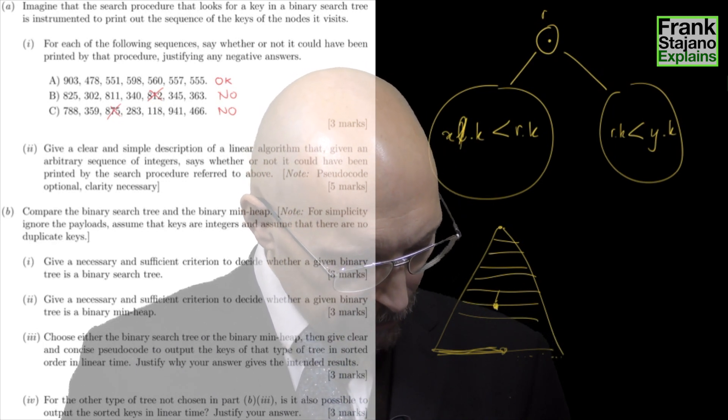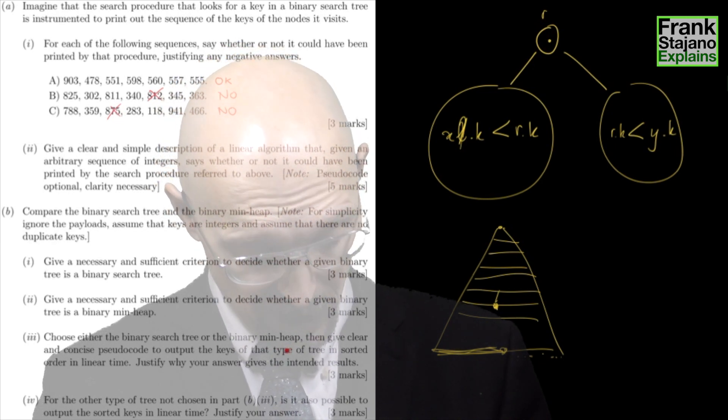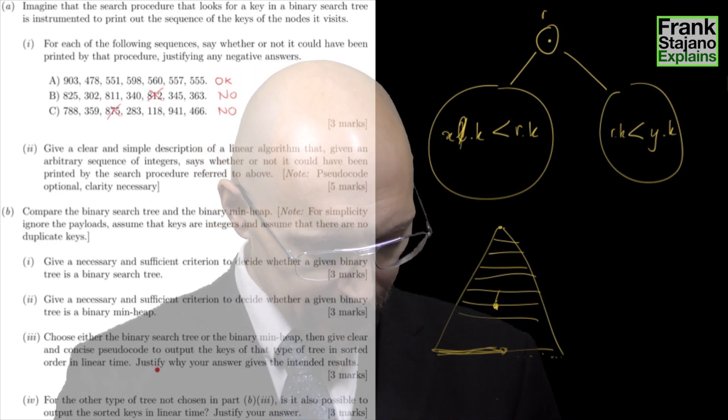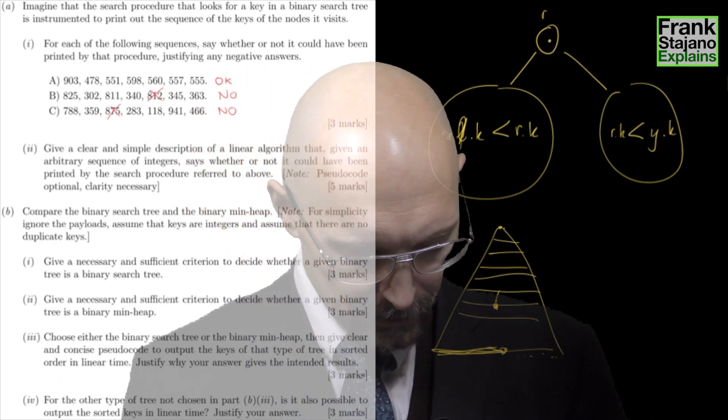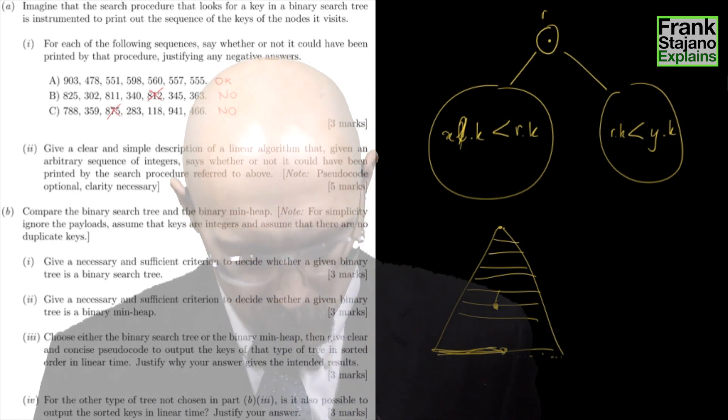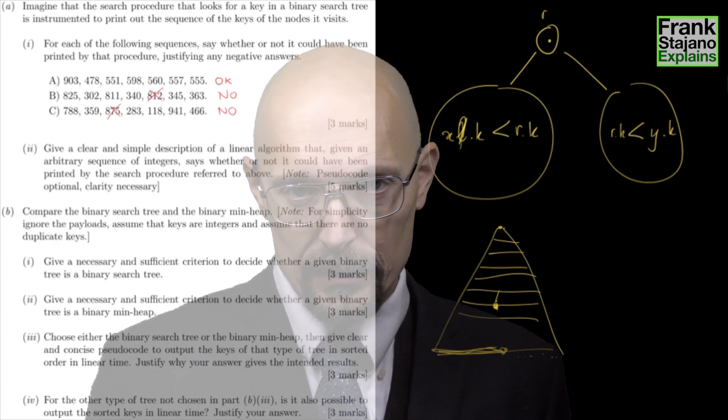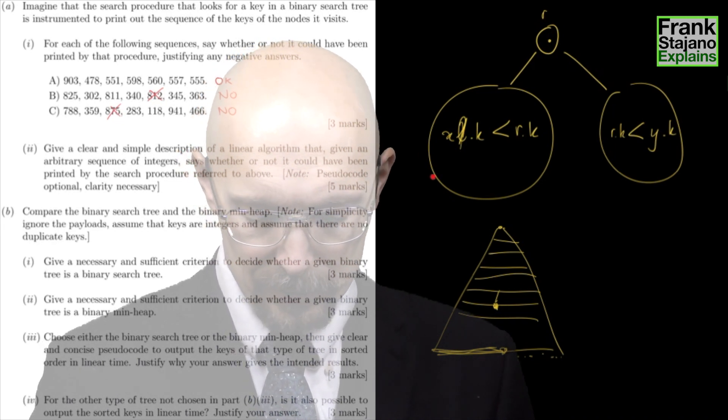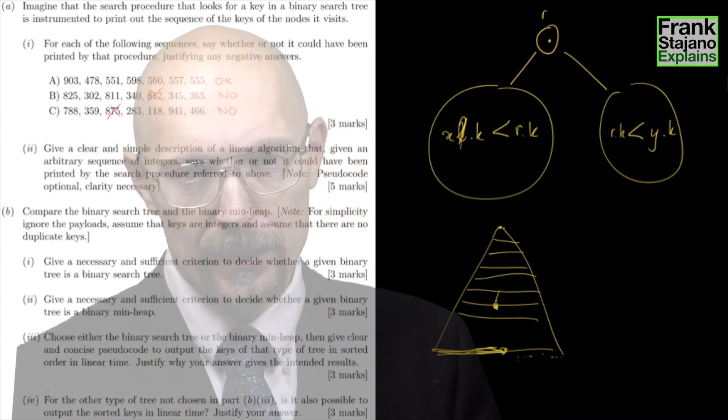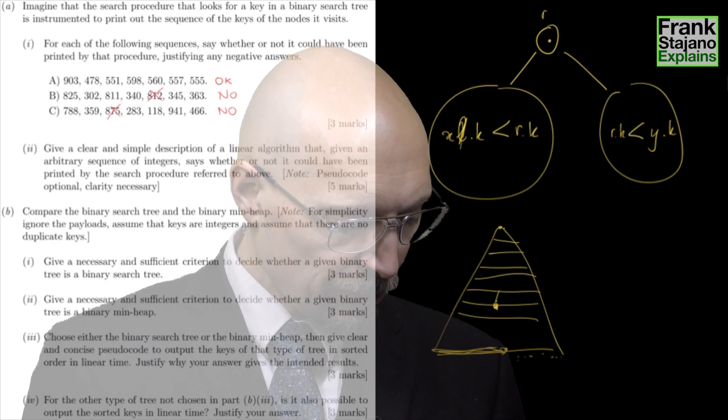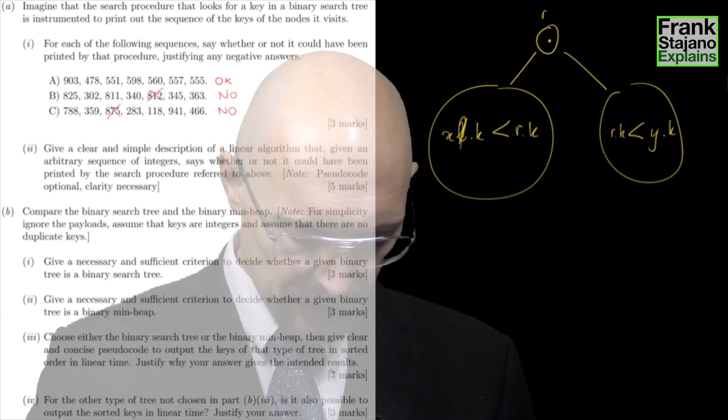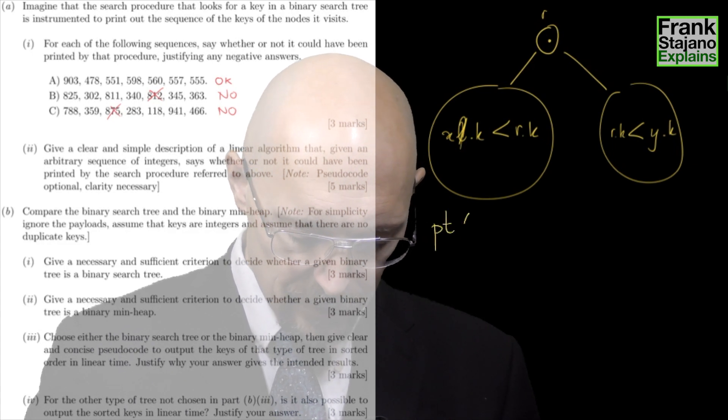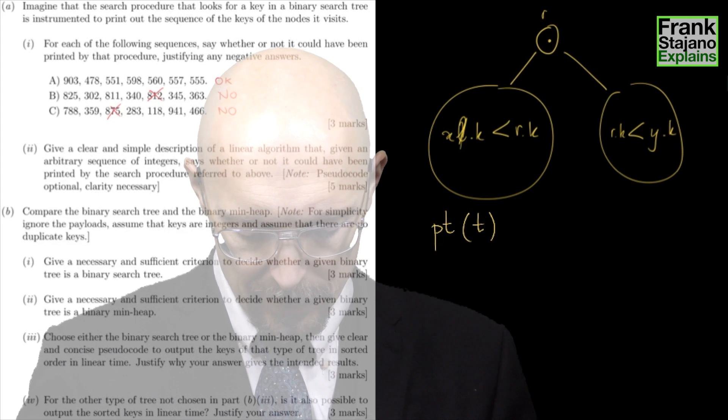Choose either the binary search tree or the binary min heap. Then give clear and concise pseudocode to output the keys of that type of tree in sorted order in linear time. Justify why your answer gives the intended results. Well, which one would I choose between those two? It looks like the binary search tree is a better candidate because it has all these less-than things which order all these things, that kind of maps naturally into a recursive procedure for printing things in order.